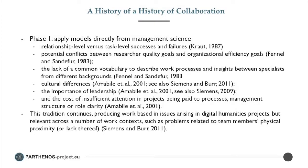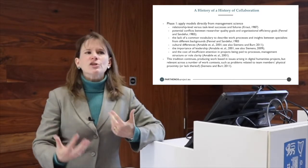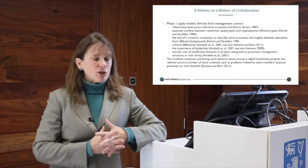Many people have been looking at collaboration in digital humanities and research infrastructure for many years. In an early phase — the 80s and 90s through the early 2000s — you find a lot of models taken directly from management science, treating this massive scale of collaboration as a management task. There was work about relationship-level versus task-level successes and failures, conflicts between researcher quality goals and organizational efficiency goals, lack of common vocabularies, cultural differences, the importance of leadership, and the costs of insufficient attention to processes, management structure, or role clarity. These aspects could equally have been researched in a standard management context, but applying them to digital humanities labs meant that a professionalization was happening within the community.